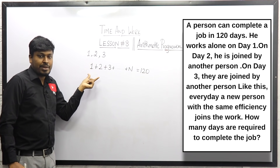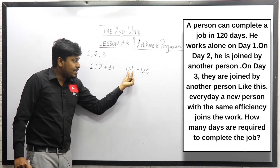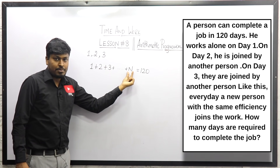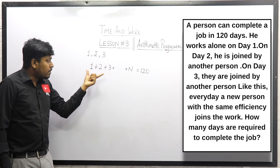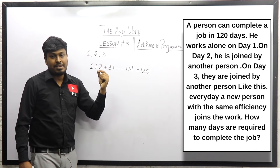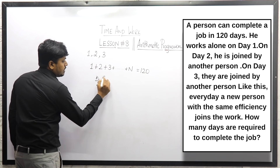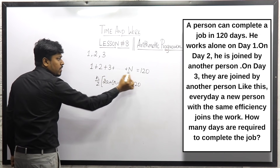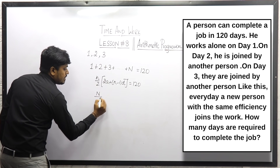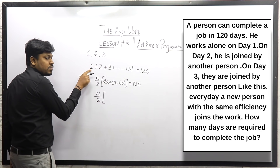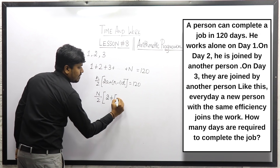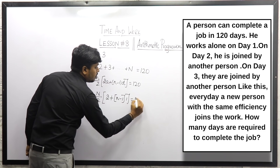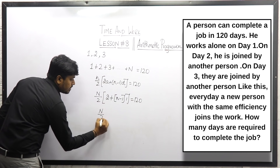Unlike question 1, we don't know n (the number of days) here — that's what we need to find. The series is 1 + 2 + 3 + ... + n, and its sum equals 120. Substituting in the formula: n/2 × (2×1 + (n−1)×1) = 120. Here a = 1 and d = 2 − 1 = 1.